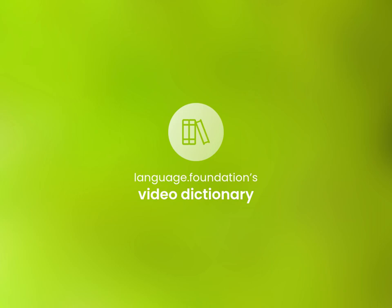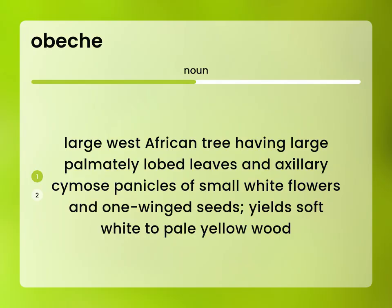Language.Foundation's Video Dictionary, helping you achieve understanding. Large West African tree having large palmately-lobed leaves and axillary panicles of small white flowers and one-winged seeds. Yields soft white to pale yellow wood.